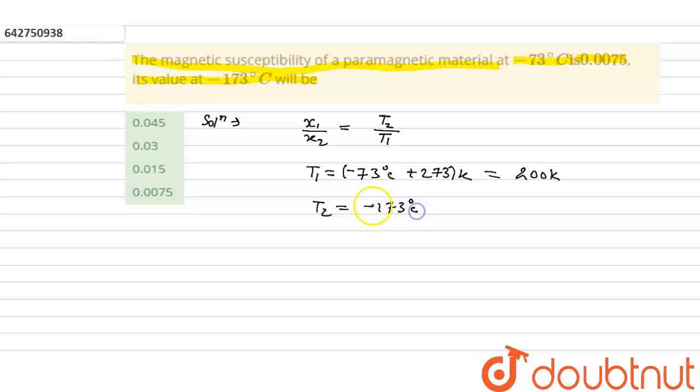And T2 will be equals to minus 173 degrees Celsius plus 273, so it will be equals to 100 Kelvin. Now we put all the values in equation.